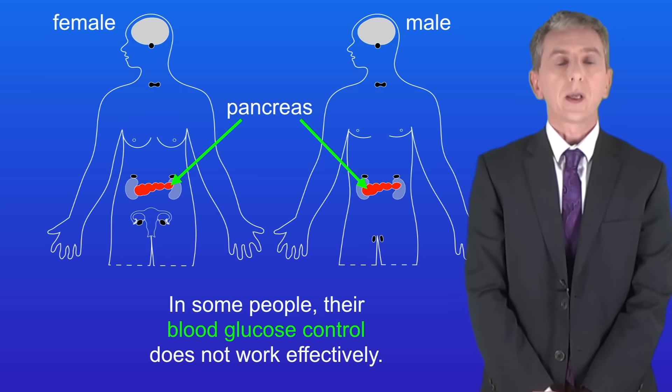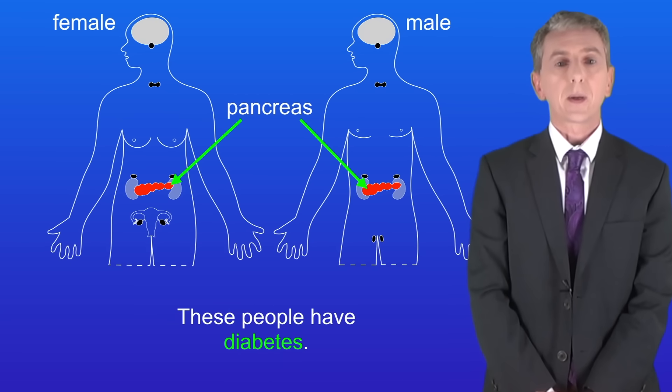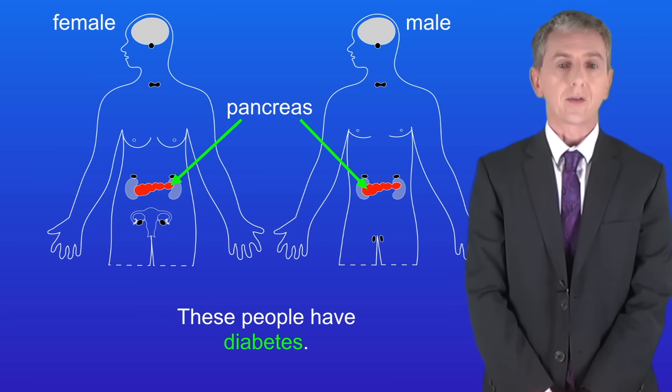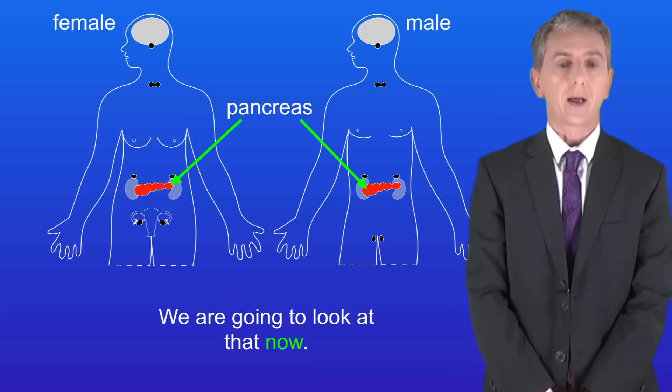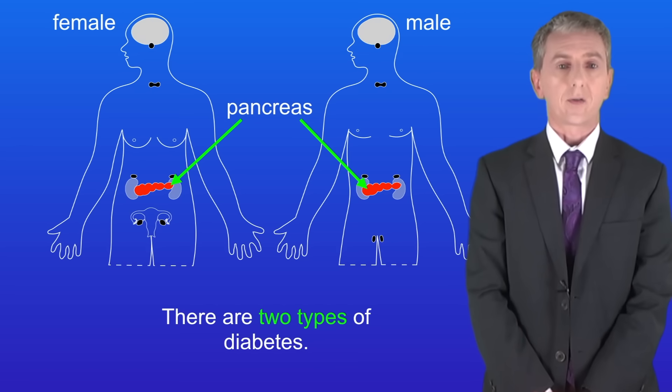In some people their blood glucose control does not work effectively. These people have diabetes, and there are two types of diabetes.